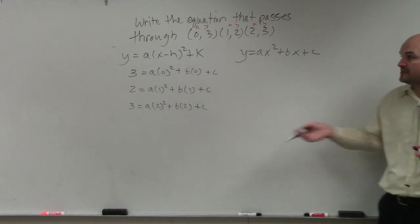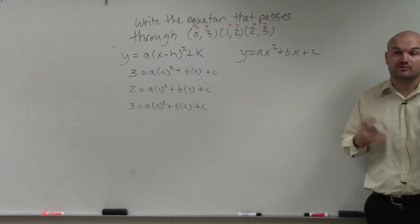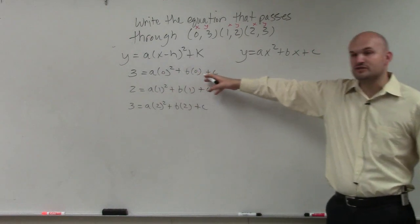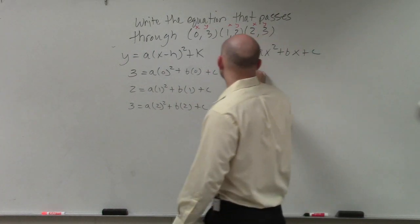I'm not using vertex form in this one. I'm using standard form. And the reason why I'm using standard form is now let's go and simplify what this is. Well, this all goes to 0, right? So you could say c equals 3.